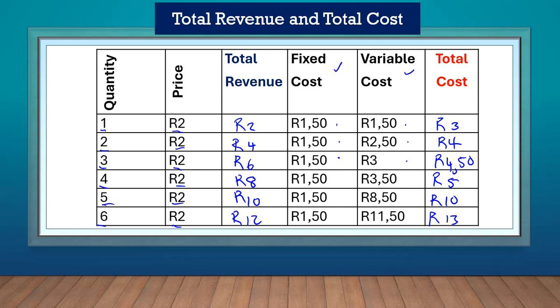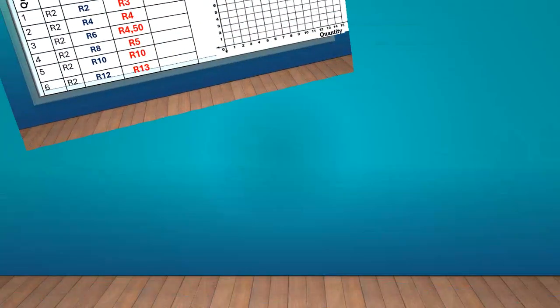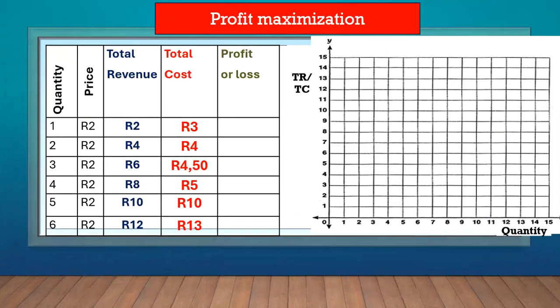What I want to do now is take the total revenue column and the total cost column and move to the next slide so we can work out whether we have a profit or a loss. You can check our total revenue column and the total cost column from the previous slide.